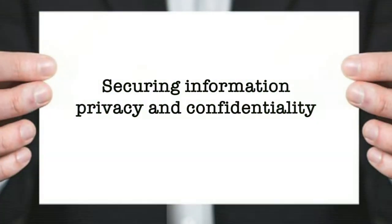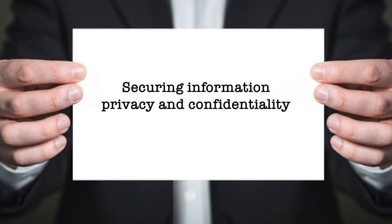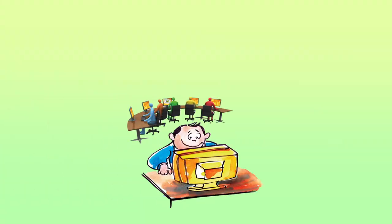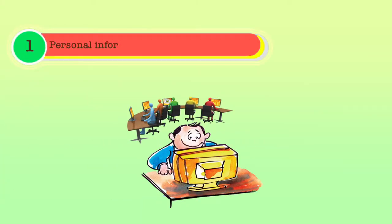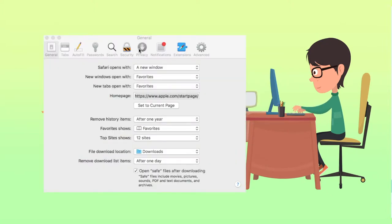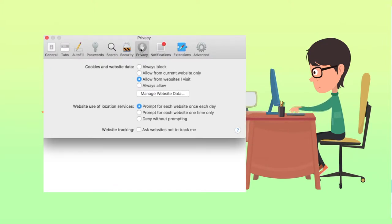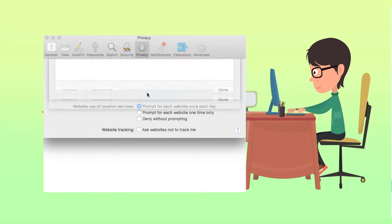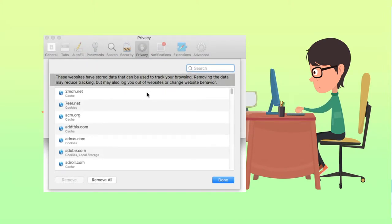Now let us have some discussion on securing information privacy and confidentiality. Let us start with security issues associated to personal information on public computers. While using publicly accessible computers, students or staff may unknowingly leave personal information on the public computers, such as cached web pages and cookies, that are then available for inspection by others.